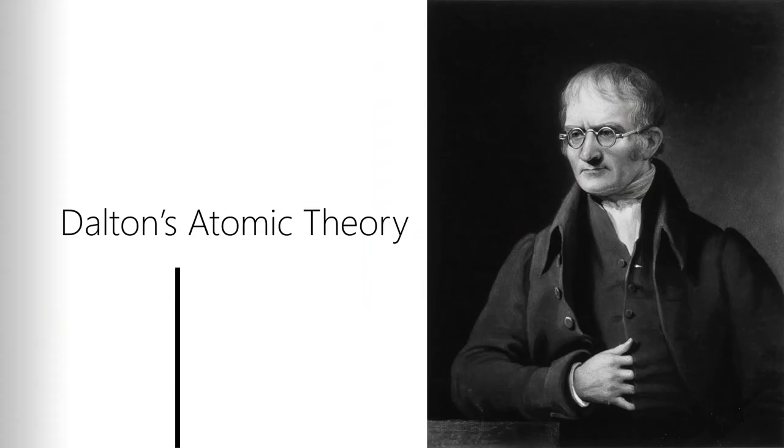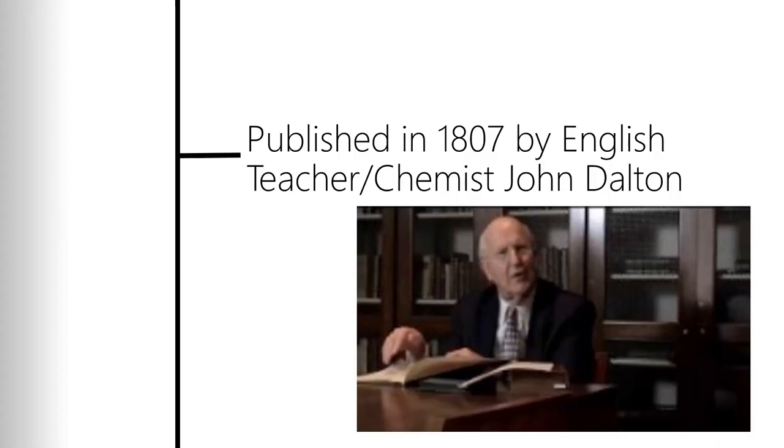The first guy who comes up with a modern theory of the atom is an English school teacher—put that in quotes because he was actually not just a school teacher, he was also a gentleman scientist who had other discoveries to his name. We're going to talk about one of his discoveries in the gas laws in chapter 8, named John Dalton. John Dalton publishes his work in 1807 under Dalton's atomic theory. There's a whole YouTube video under the chemistry heritage project that you can go look up. It's a really interesting little video about how he got to atomic structure from meteorology.